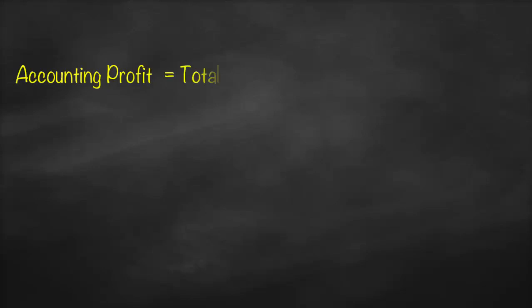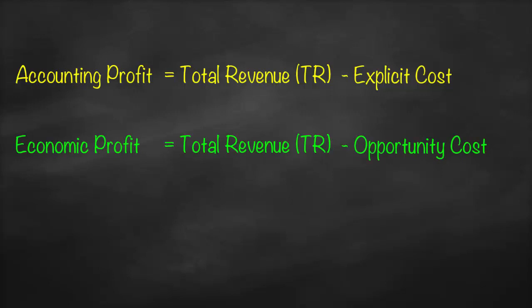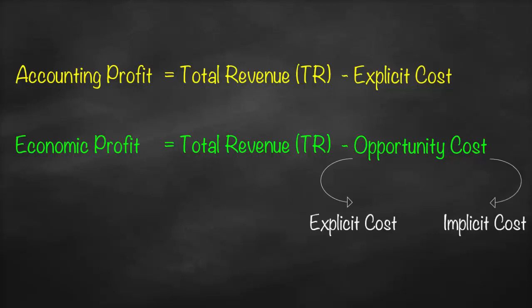We have two types of profit. The first one is accounting profit, and the second one is economic profit. Accounting profit is total revenue minus only explicit cost. Economic profit is total revenue minus opportunity cost, or economic cost. We know that opportunity cost is composed of both explicit cost and implicit cost.